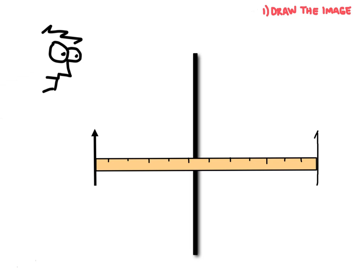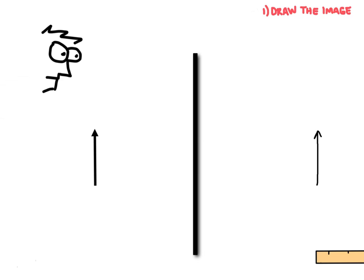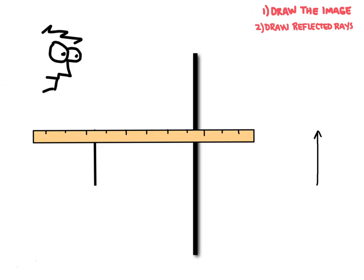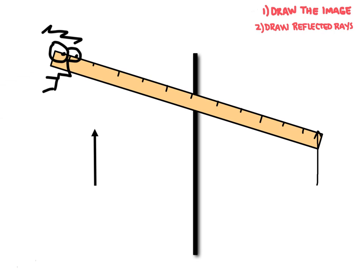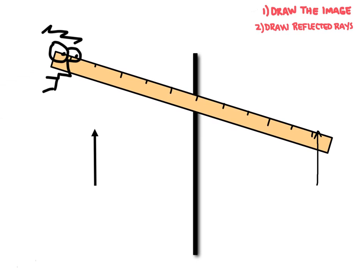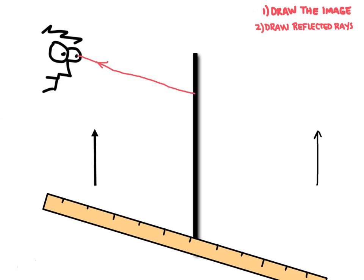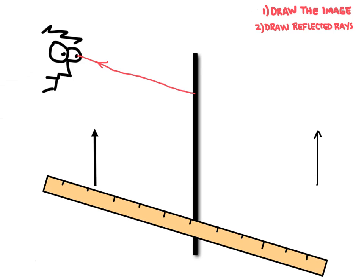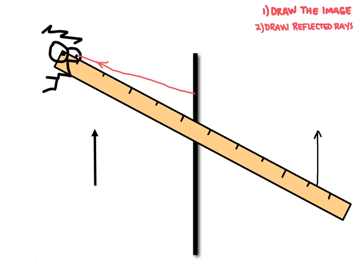The next step is to draw in the reflected rays. This is kind of working backwards, but it's the easiest way to draw a ray diagram. Take a ruler and match up your eye to the top of the image and draw a line in to show the reflected ray, then do the same for the bottom. These lines represent the light actually bouncing off the mirror and hitting your eye to form the image. Some people draw a dashed line connecting to the image, but you don't really need to do that.